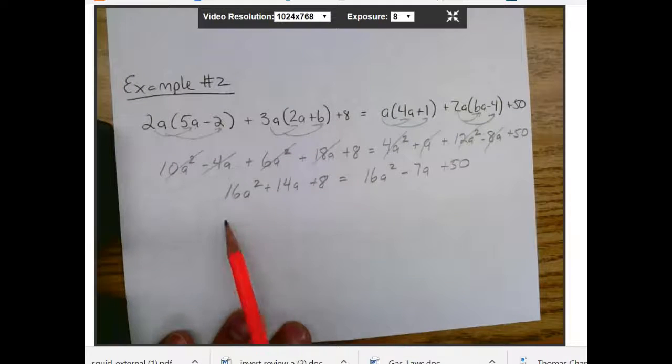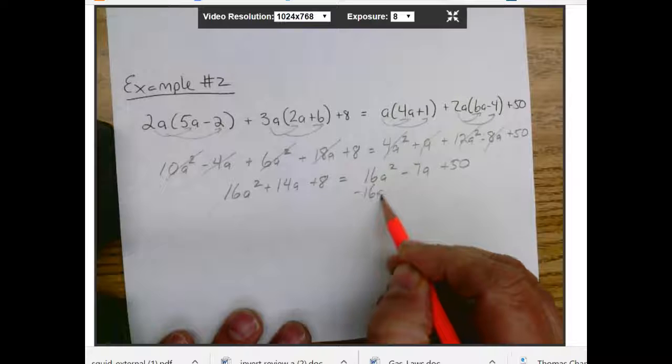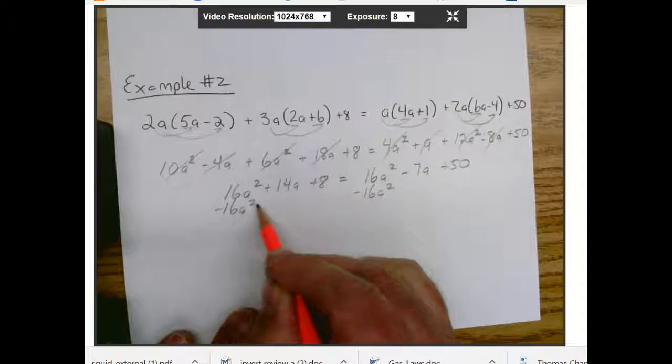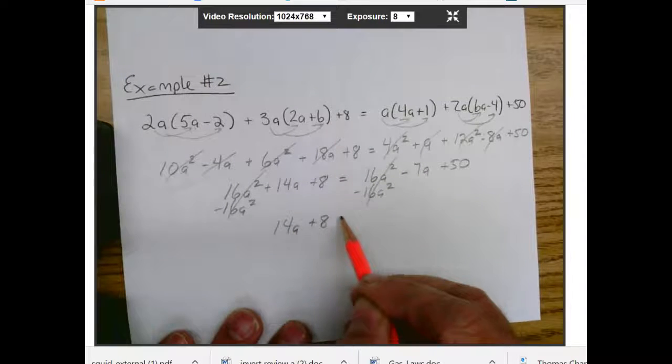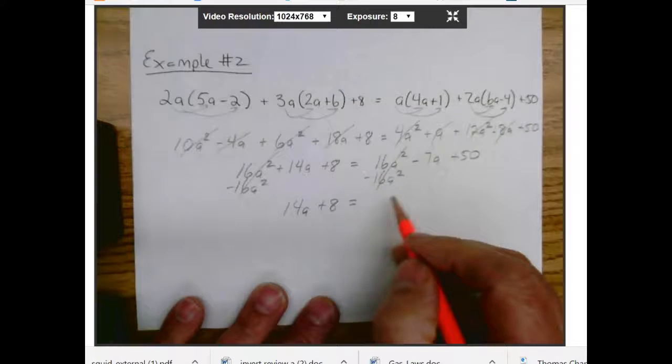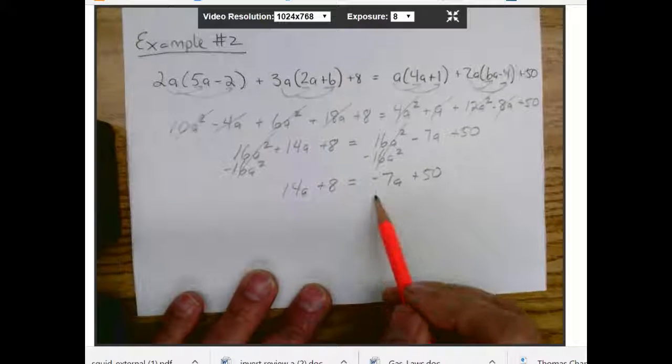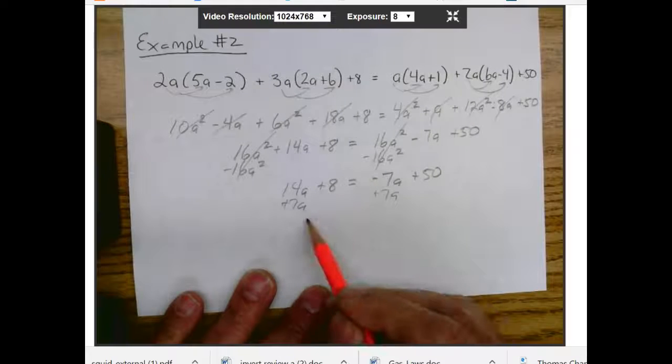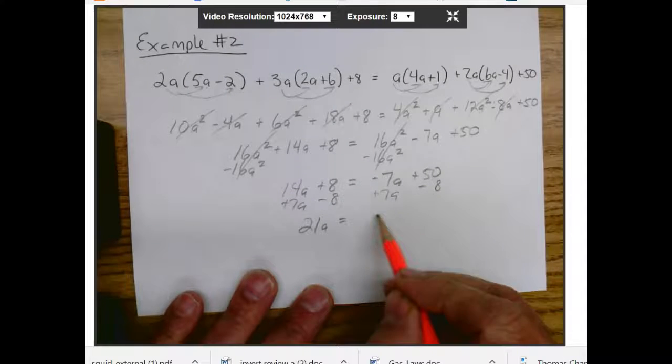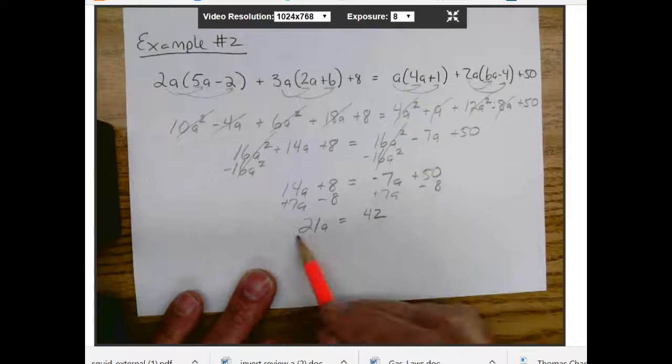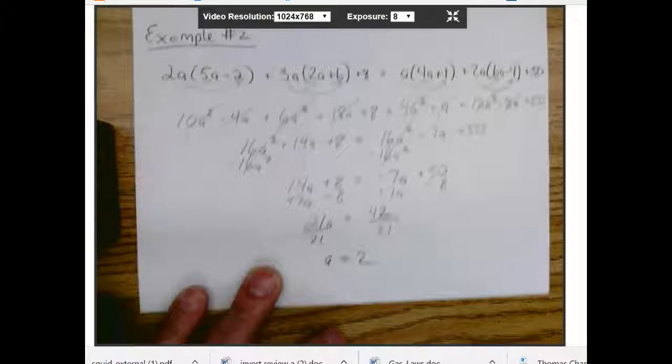And then we're going to move things around so we get a by itself. And here it's real nice because we have 16a squared. Here's 16a squared. So we minus 16a squared on both sides. And they cancel. And we end up with 14a plus 8 equals negative 7a plus 50. And then we'll do, let's add 7a to both sides. It's going to be 21a. And then let's minus 8 on both sides. That's going to give us 42 divided by 21. And we get a equals 2. So that's the example you do that.